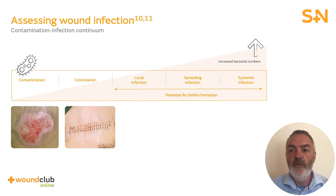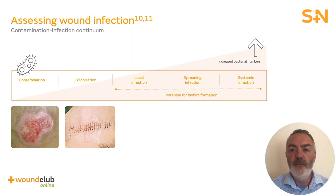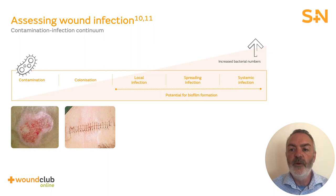Every patient with a wound exists somewhere on this contamination infection continuum. Bacteria are present in all wounds and, at low levels, help to stimulate the inflammatory response necessary for healing. Contamination means that bacteria are present in the wound. Colonisation is the replication of bacteria which adhere to the wound surface; low levels of colonisation do not impair wound healing — at this point, bacteria aren't dividing and aren't causing a host response. The point at which bacteria multiply on the wound surface and interfere with wound healing is known as localised infection, where bacteria are beginning to divide and cause a localised host response. Localised infection can impair wound healing without creating a systemic host response.